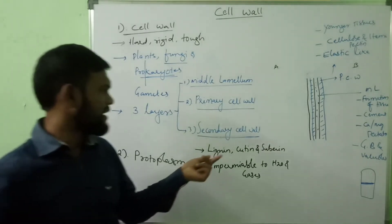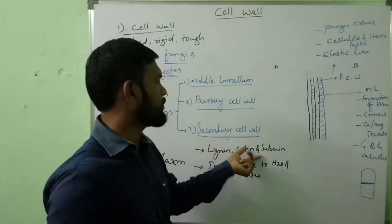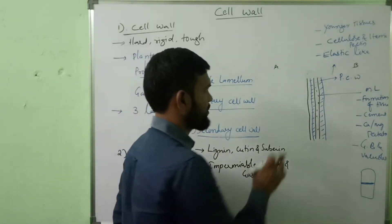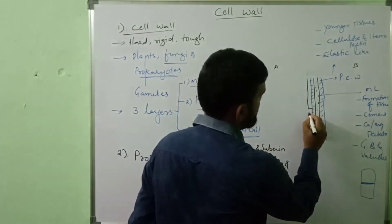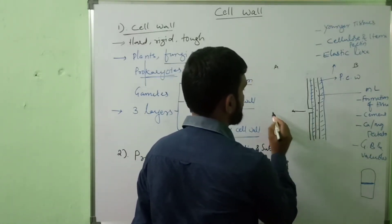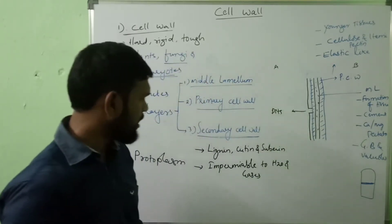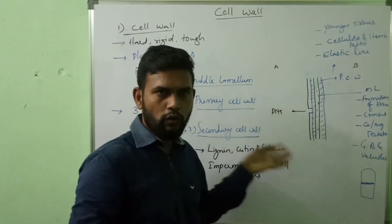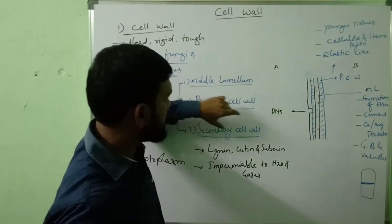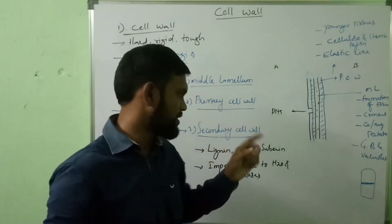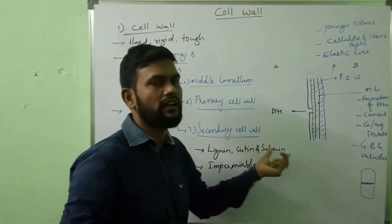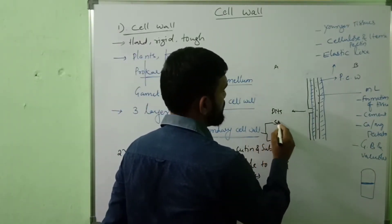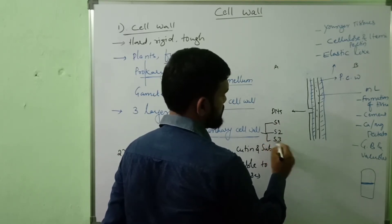Due to the presence of lignin, cutin, and suberin, the secondary cell wall is impermeable to water and gases. These substances — lignin, cutin, and suberin — are not deposited uniformly; at certain places they are not deposited, and those places are called pits. Based on the orientation and deposition of lignin, cutin, and suberin, the secondary wall has three zones.